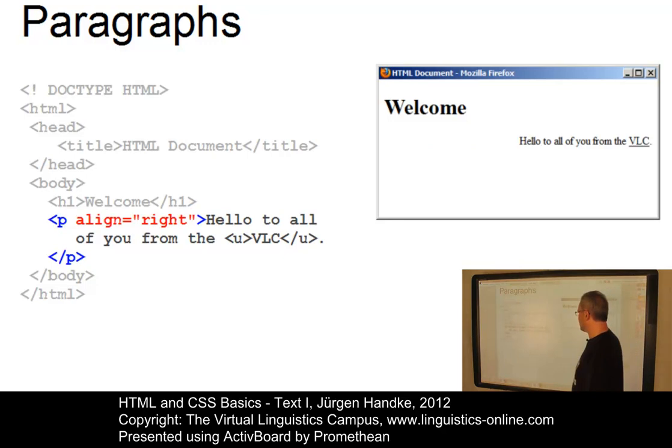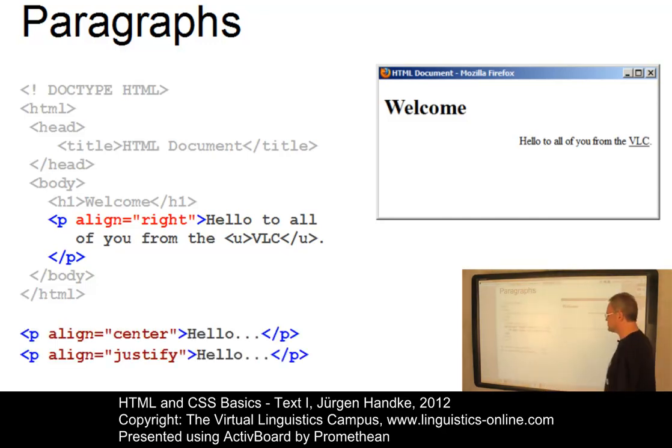Now in this case, we have aligned the text to the right. Align equals right is the example. Other possibilities are align equals center or align equals justify.